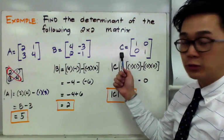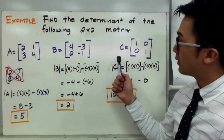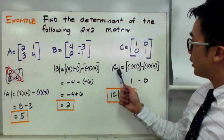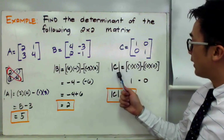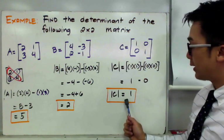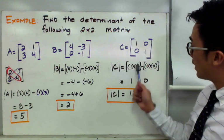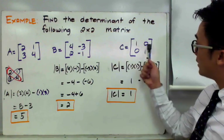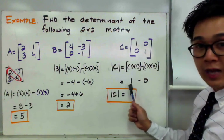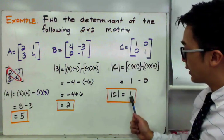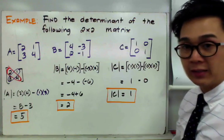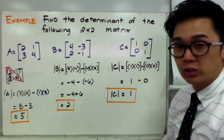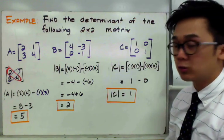For matrix C, using the same rule as the first two examples, the determinant of C is simply 1, because 1 times 1 is 1, and 0 times 0 is 0. Subtracting them gives us 1 as the answer. And this is how we find the determinant of a 2x2 matrix.